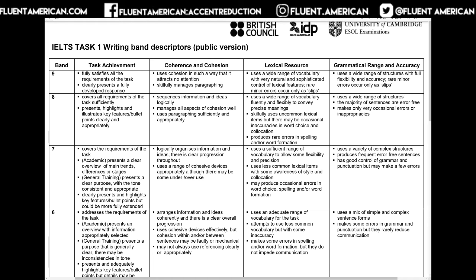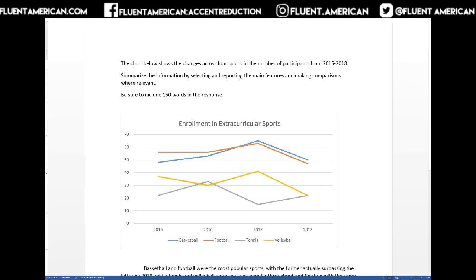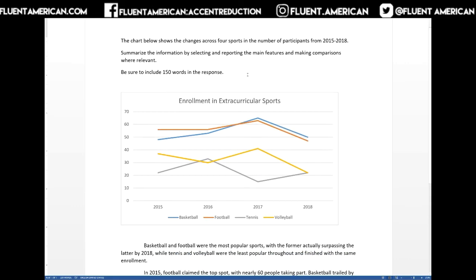We'll be looking at coherence and cohesion, lexical resource, and grammatical range and accuracy. Let's begin by taking a look at task achievement — we need to make sure we're fully satisfying the requirements for the task and also having a fully developed response. Let's see how we're achieving those task achievement goals if we want this to score an 8 or a 9, the highest scores on IELTS.